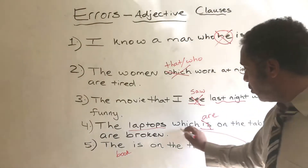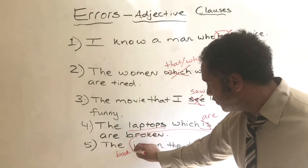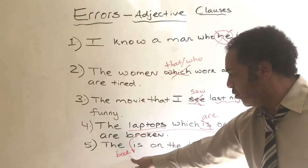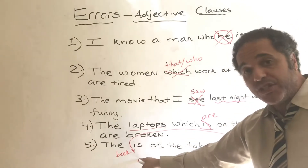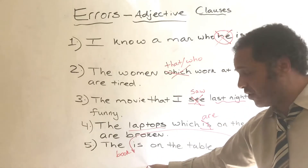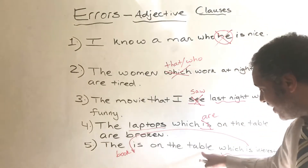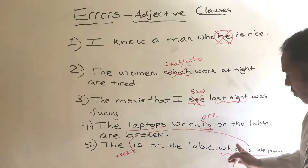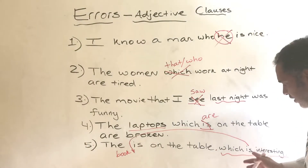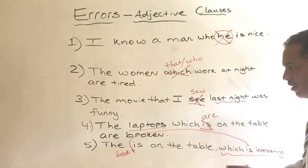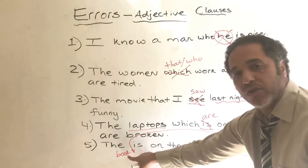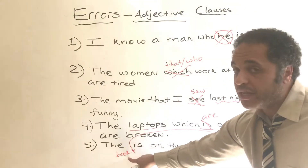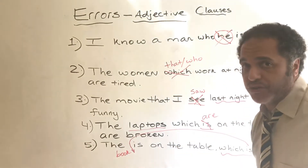So: 'The book which is interesting is on the table.' Make sure that the adjective clause comes right after the subject or the noun that you are describing.